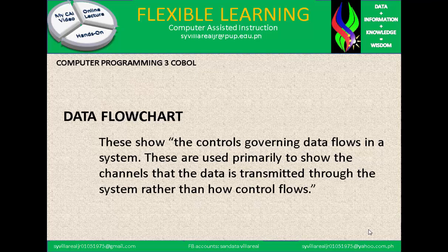Data flowchart: this shows the control governing data flows in a system. These are used primarily to show the channels that data is transmitted through the system, rather than how controls flow. A data flowchart shows where data goes and what is the avenue of data transmission, and what changes happen to the data as it moves through the process.